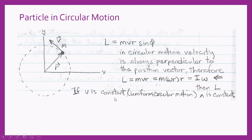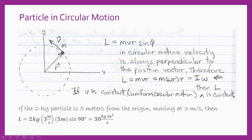Furthermore, if velocity is constant, as in uniform circular motion, then the angular momentum does not change. For a particle of two kilograms located five meters from the origin — the axis of rotation — moving at three meters per second, the angle phi is 90 degrees, and we wind up with an angular momentum of 30 kilogram meters squared per second.